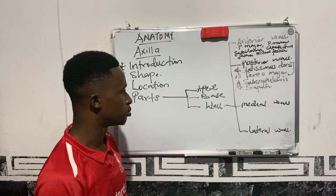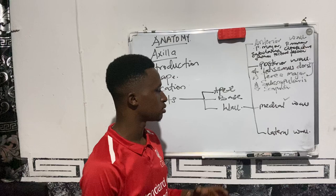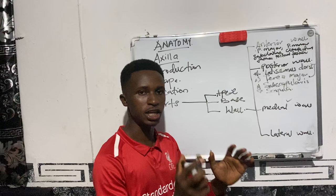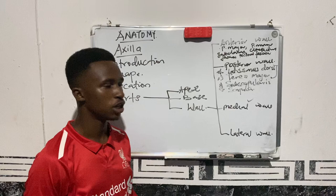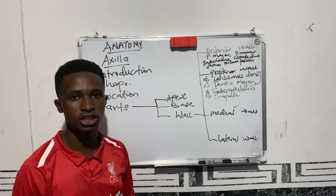We move to the next, which is the medial wall. The medial axillary wall is formed by the first four ribs and the muscles that are between them. The first four ribs and the serratus anterior muscles located between these first four ribs form the medial wall of the axilla. The medial wall of the axilla is muscular in nature; it is not a bony wall.